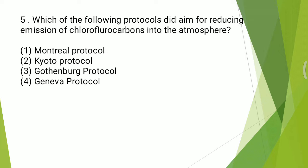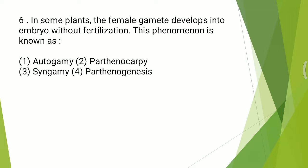The correct answer is the first option — Montreal Protocol. Sixth question: in some plants the female gametophyte develops into an embryo without fertilization; this phenomenon is known as autogamy, parthenocarpy, syngamy, or parthenogenesis? The correct answer is parthenogenesis.